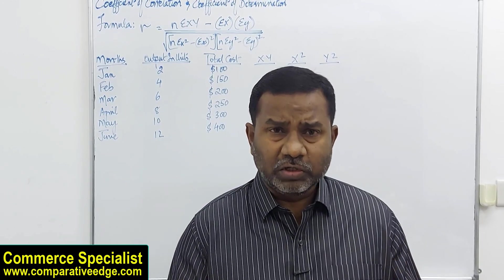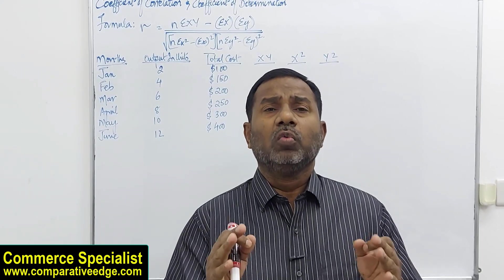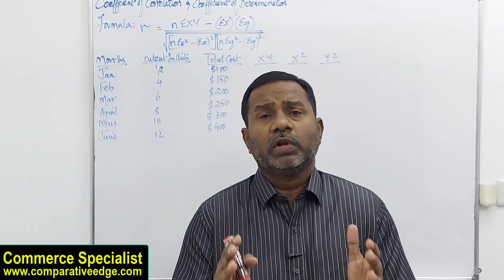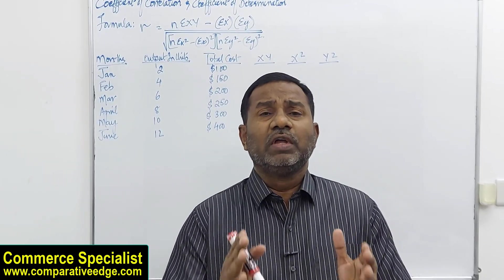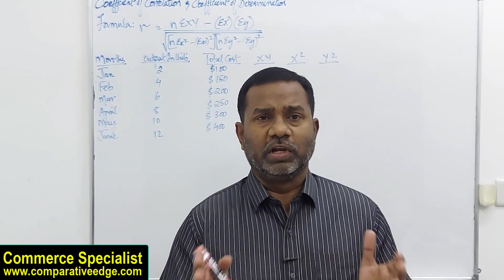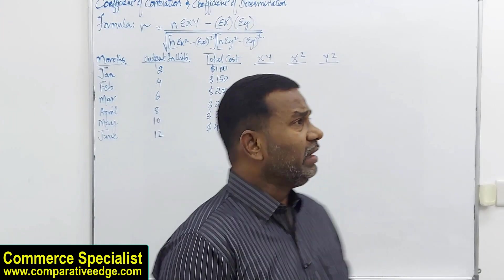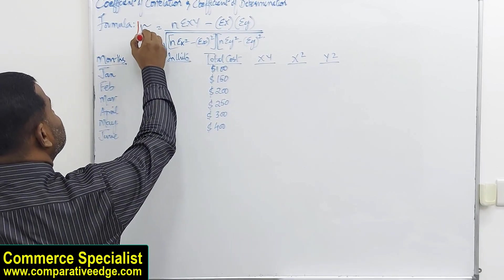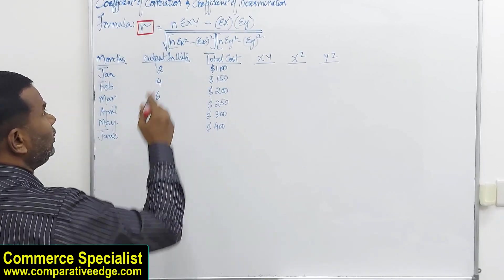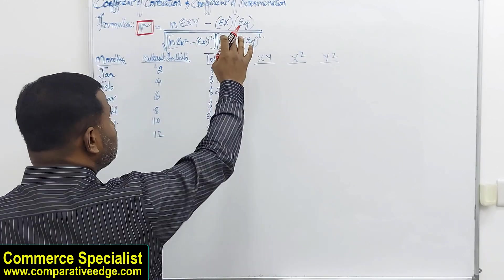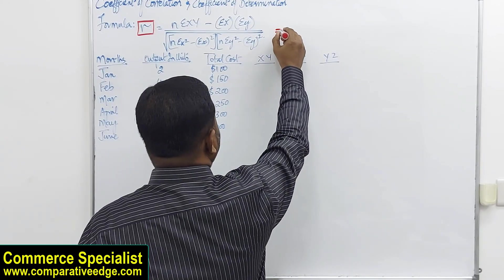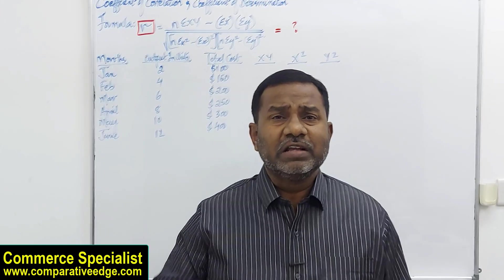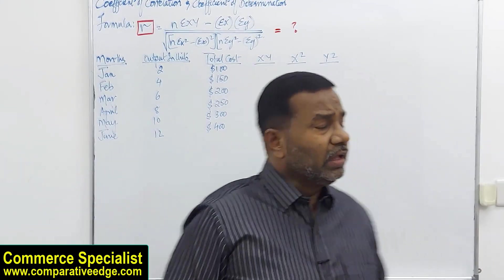Before getting into the formula and calculation, we need to understand what the coefficient of correlation means. The coefficient of correlation measures the degree of linear relationship between two variables. Statistically it is denoted by small r. Here is the formula, and once you get the value of r, it tells you something meaningful.